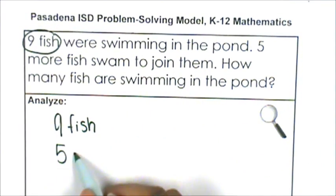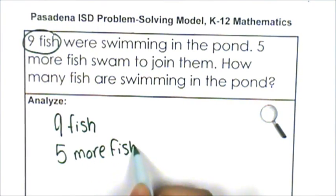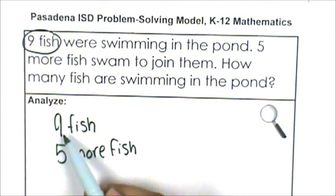So, we have five more fish. They're not the same fish. There were nine and now there's five more.